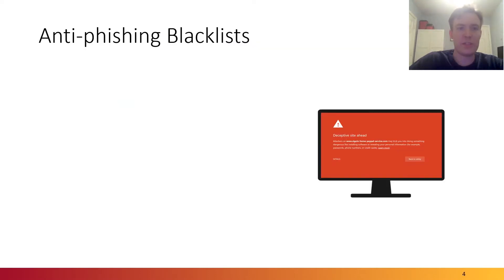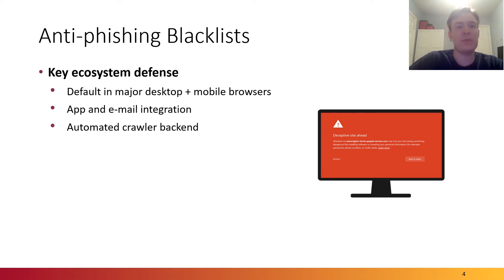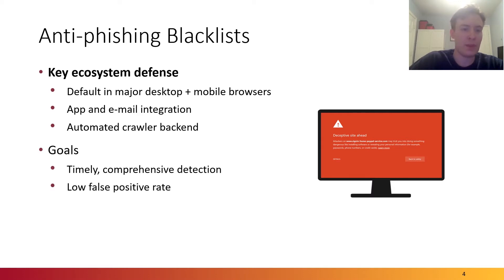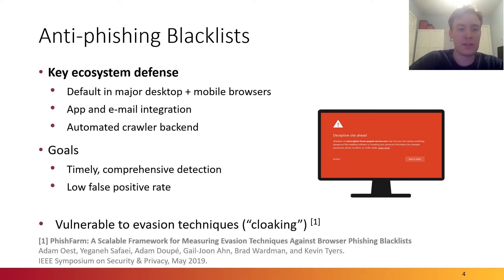Numerous mitigations have been proposed to protect users from these threats. Anti-phishing blacklists are a key technical mitigation — the key ecosystem of defense which is default in major desktop and mobile browsers and also integrated in other contexts. Blacklists use an automated crawler backend and seek to detect malicious websites and then add them to their blocklists. The goals are timely and comprehensive detection and a low false positive rate. Unfortunately, blacklists are vulnerable to evasion techniques known as cloaking, as identified in prior work.